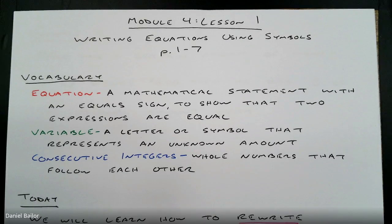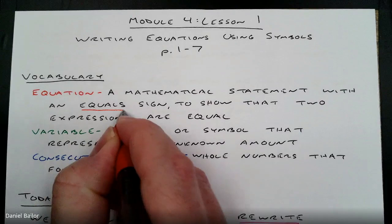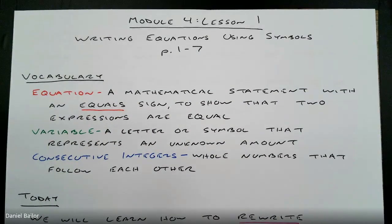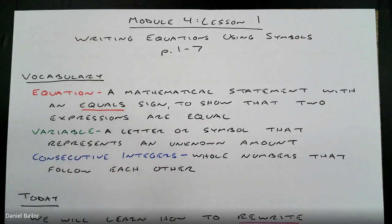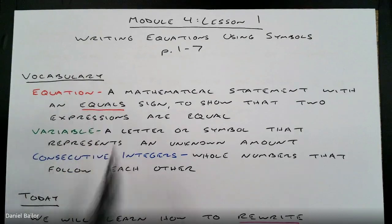Let's talk about these words. Equation is a mathematical statement with an equal sign — that's the important part. An equation has an equal sign, and it shows that two expressions are equal. On both sides of the equation are expressions. When we take two expressions and use an equal sign, it makes an equation. Quick, easy way to remember: equations have equal signs.